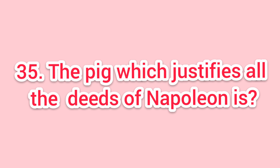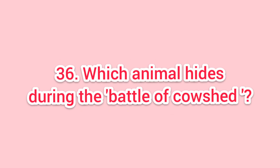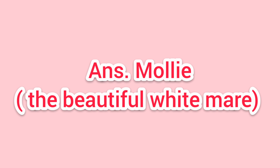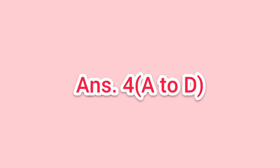Thirty-five: the pig which justifies all the deeds of Napoleon is? Answer: Squealer. Thirty-six: which animal hides during the Battle of Cowshed? Answer: Molly. Thirty-seven: how many letters is Boxer able to read? Answer: four letters, A to D.